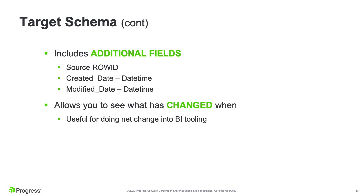Pro2 automatically includes additional fields: the row ID of the source row for joining target and source rows, plus a created date and a modified date, which are very useful for BI tools. Common reporting tools people use include Crystal Reports, CyberQuery, Power BI, and Tableau. These tools work very well on SQL Server. BI tools can also load data into their proprietary database using the modify date to fetch only rows changed since the last refresh.